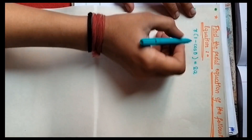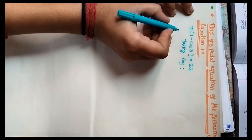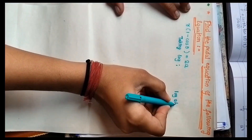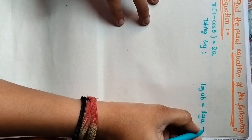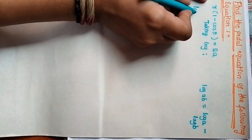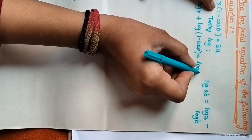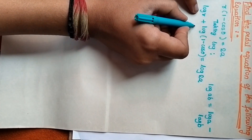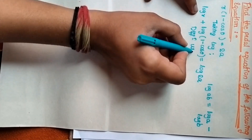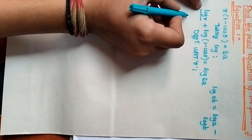Hello everyone. Now I am going to solve the problem on finding the pedal equation. The first step is taking log on both sides. We know that log of A/B is log A minus log B. We apply this formula here, then we get log r plus log of 1 minus cos theta is equal to log 2a.